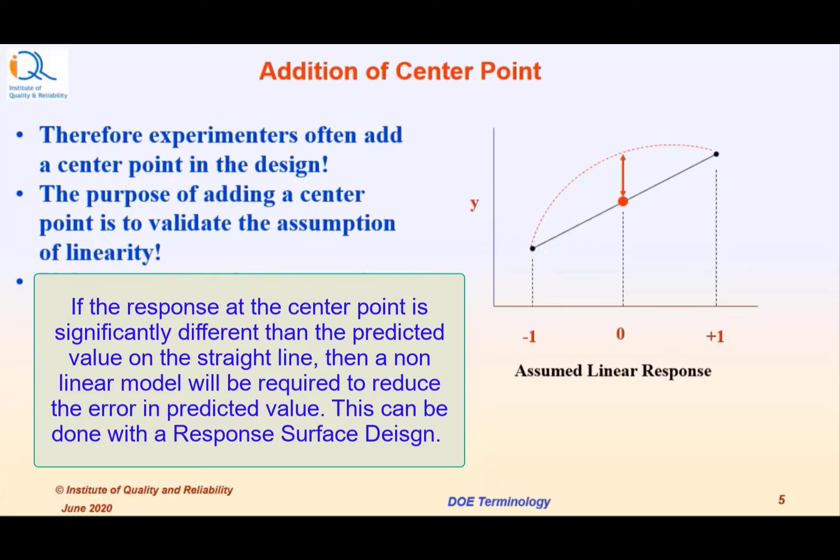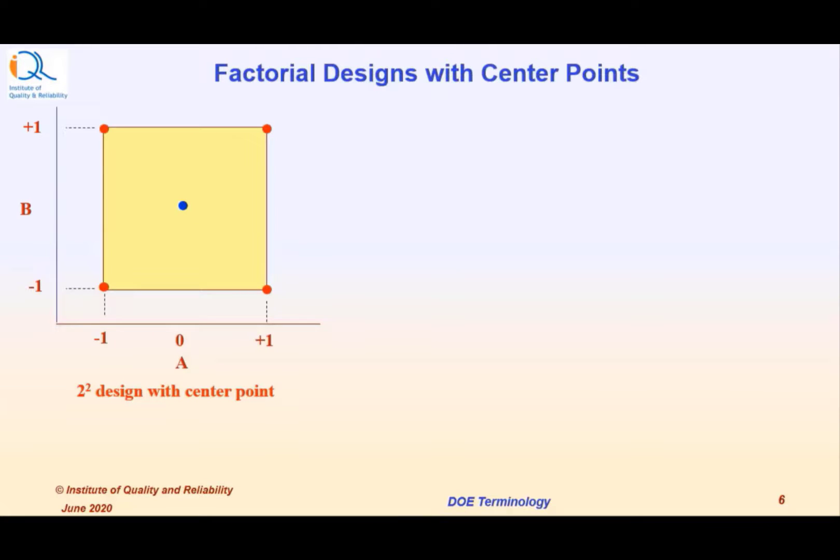This can be done with a response surface design. The first figure shows a 2 to the power 2 design with a center point, that is two factors A and B and a blue dot shows the center point in the design. Usually more than one center points are added. The second figure shows a 2 to the power 3 design with a cube and the center point is shown with a blue dot.